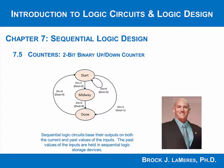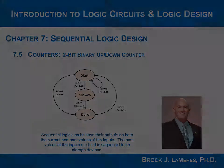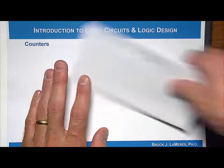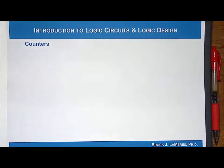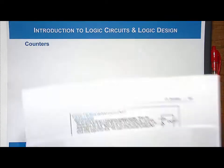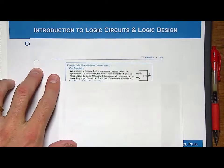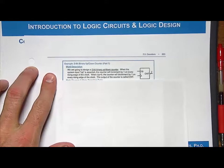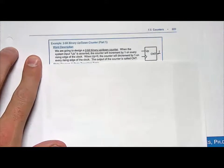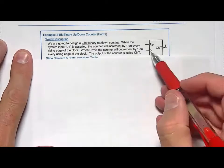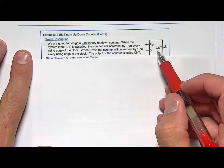Now let's look at another binary counter that's two bits wide, but this one is going to go up and down. Let's walk through the design process from start to finish. The word description of this problem is simple: a counter that will count up and down in binary. The block diagram will have an output called CNT, which is two bits wide.